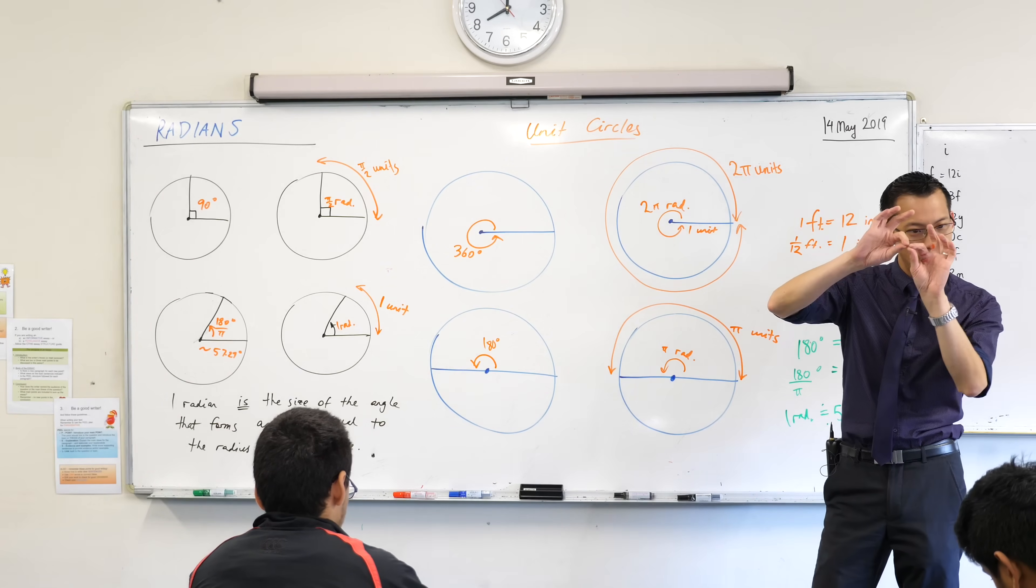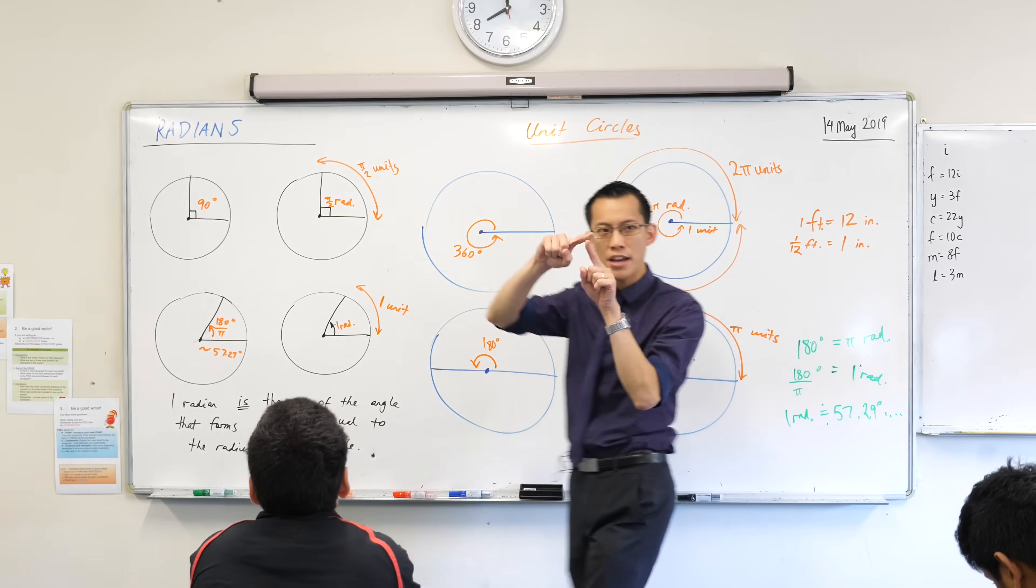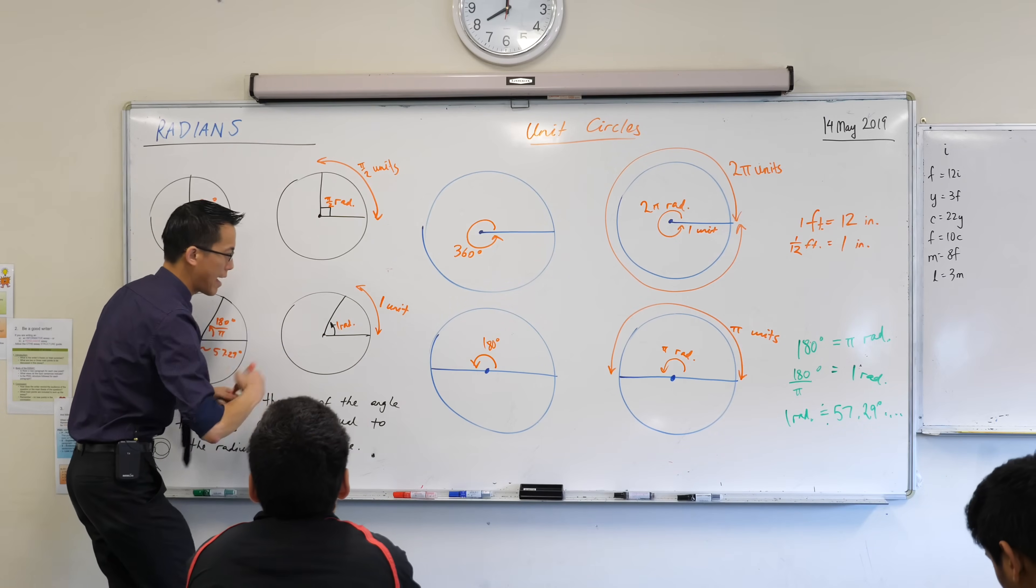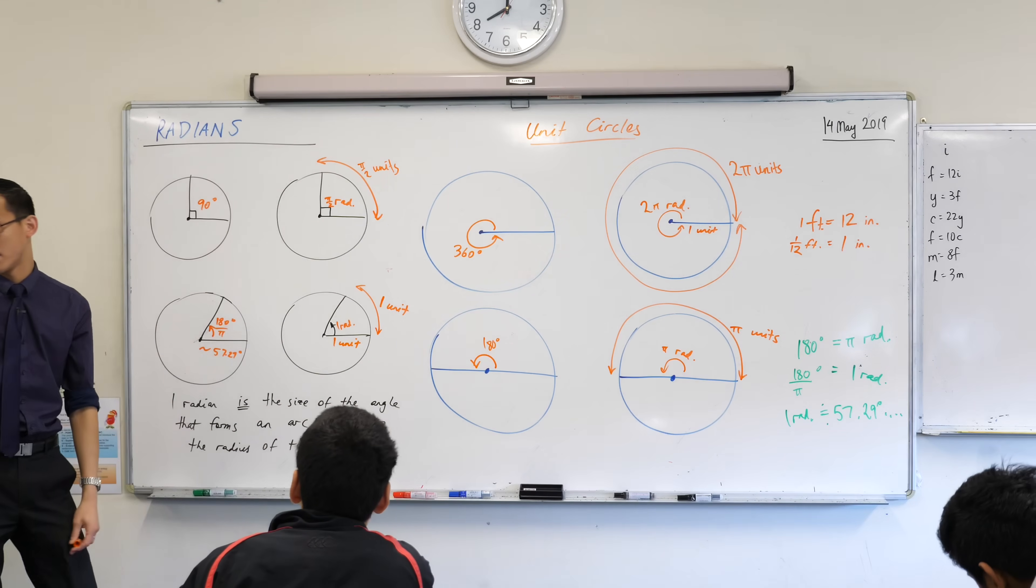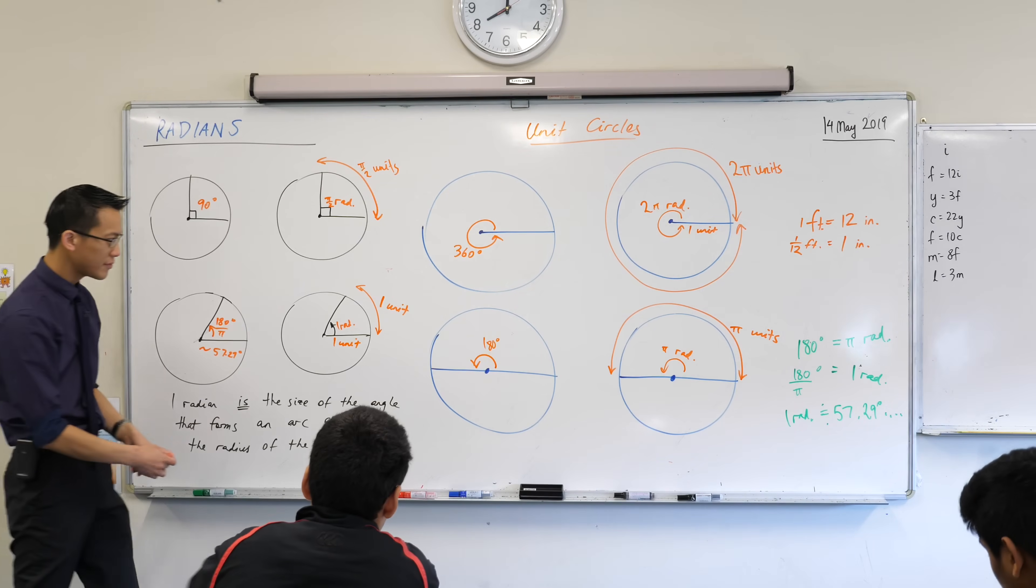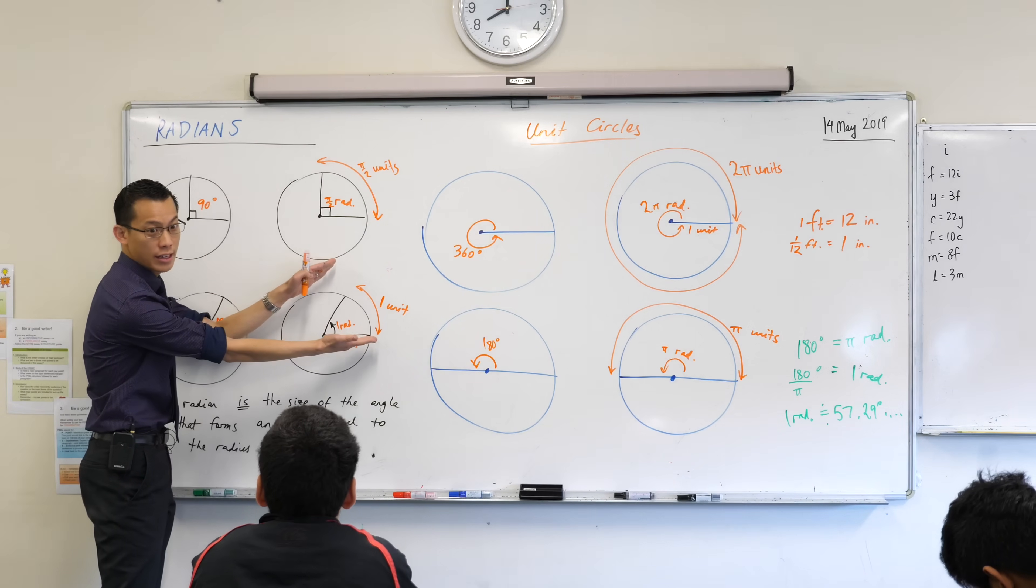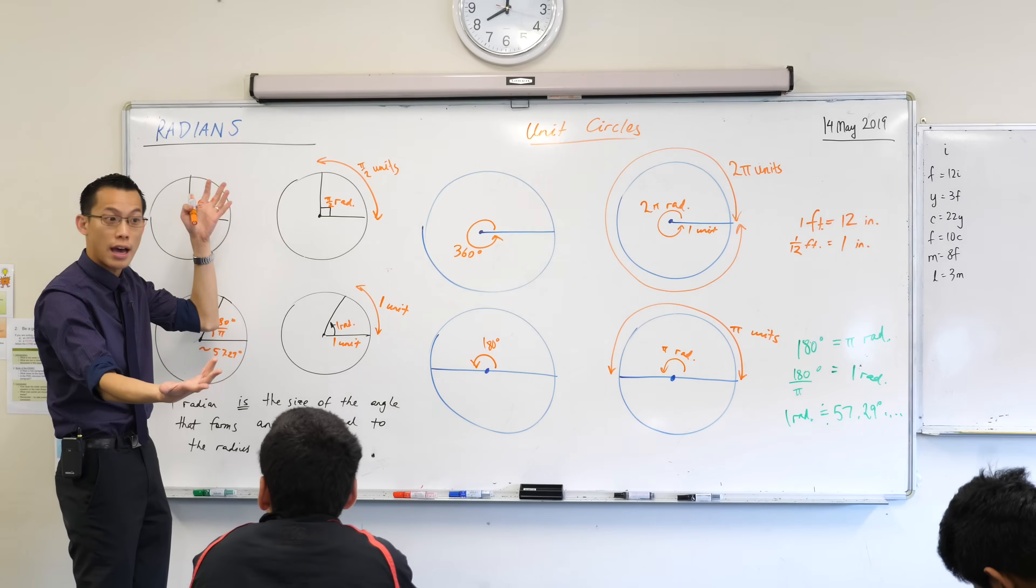If you measured across what your radius is, and then you measured around that arc, those two distances should match. That's what makes a radian a radian. So if you had a circle twice the size, a circle with a radius of two, then how big would that arc be if you had a radian there? It'd be two. It'd be exactly the same. It'd be double because I had a circle that's double size.